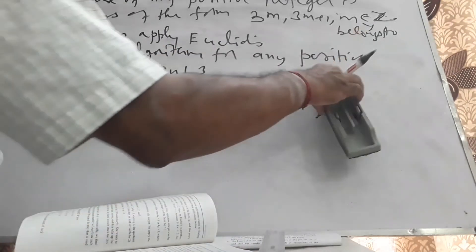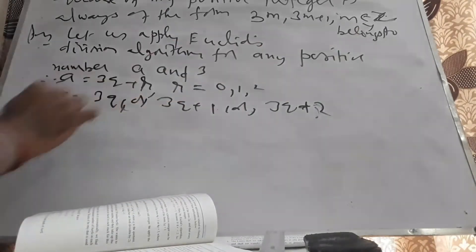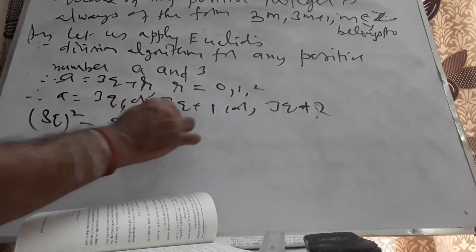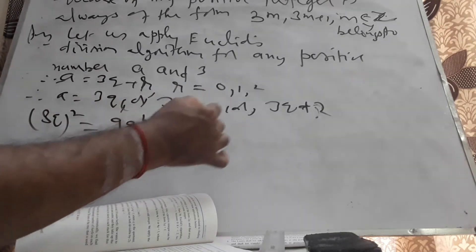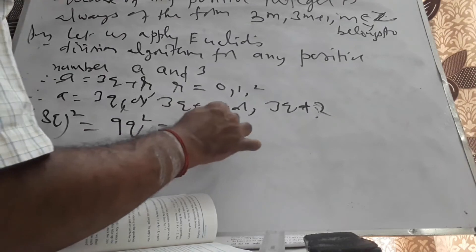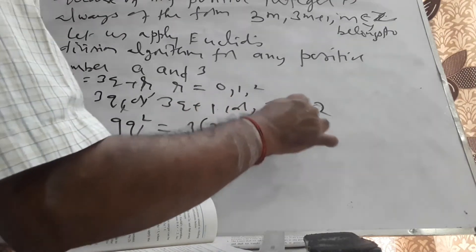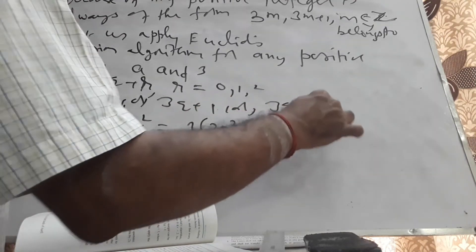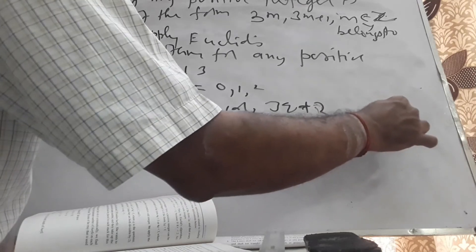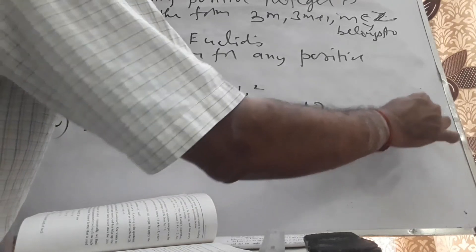Now I have to think about the square. (3Q)² equals 9Q², which is 3 into 3Q², which is of the form 3m, where m equals 3Q².